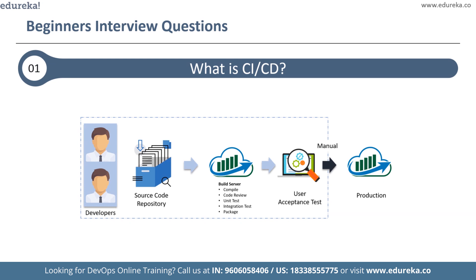The first question is: what is CI/CD, or continuous integration and continuous delivery? Continuous integration is a software development practice where members of a team integrate their work frequently — usually each person integrates at least daily — leading to multiple integrations per day. Each integration is verified by an automated build that includes tests to detect integration errors as quickly as possible, allowing a team to develop cohesive software more rapidly.